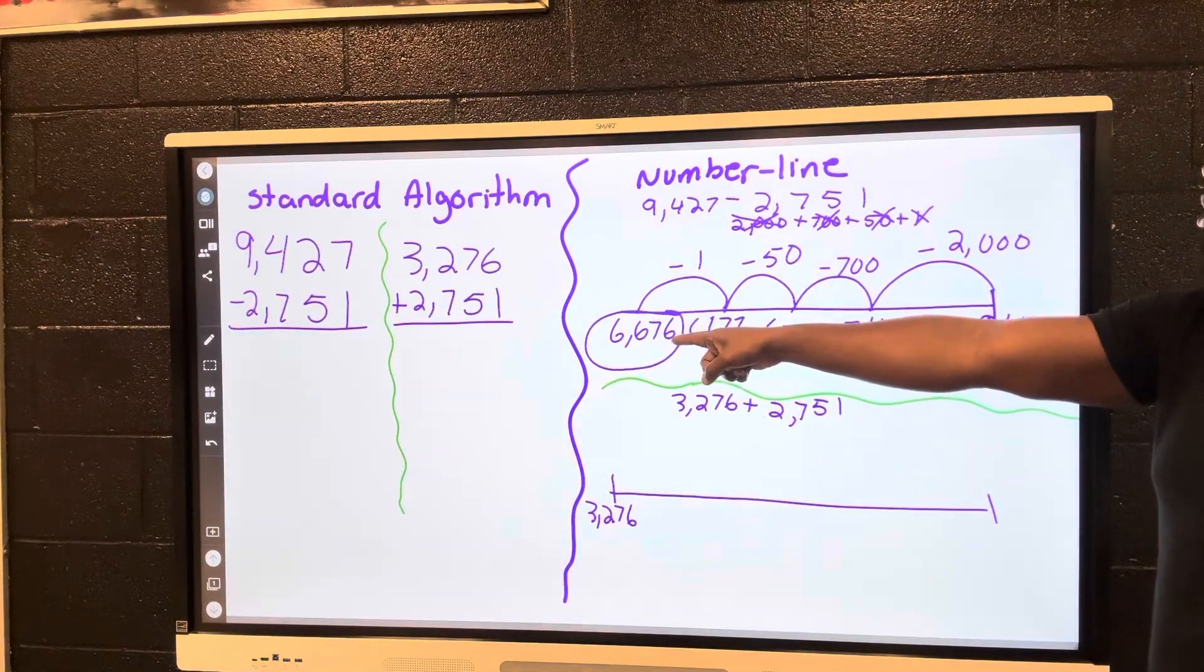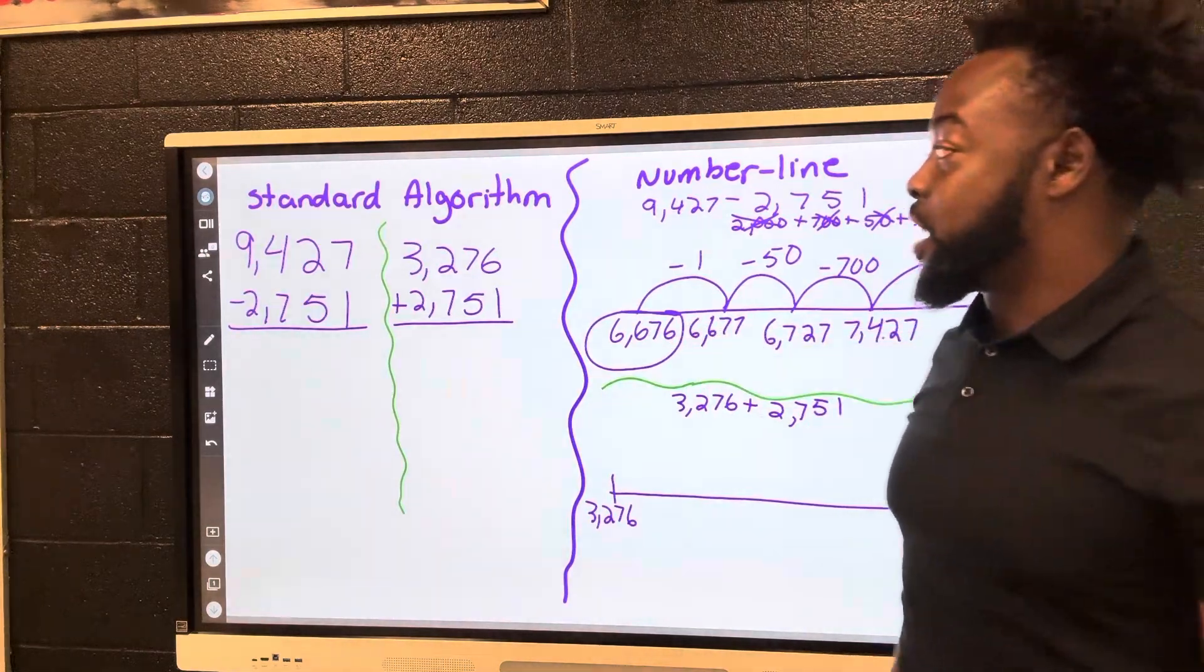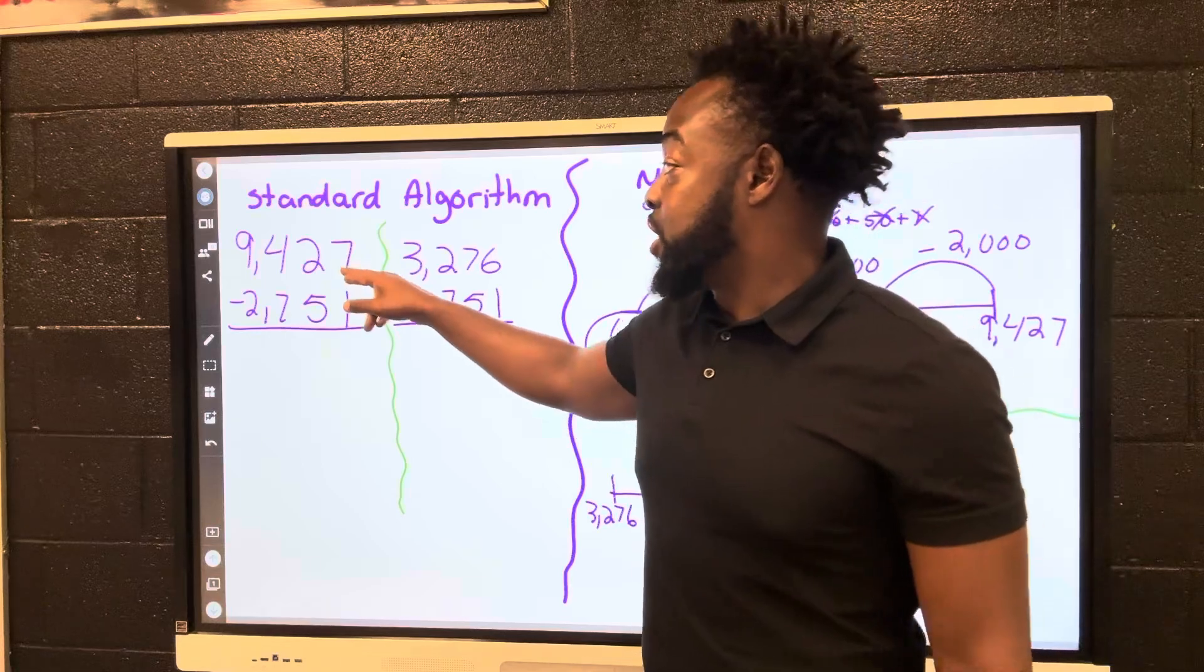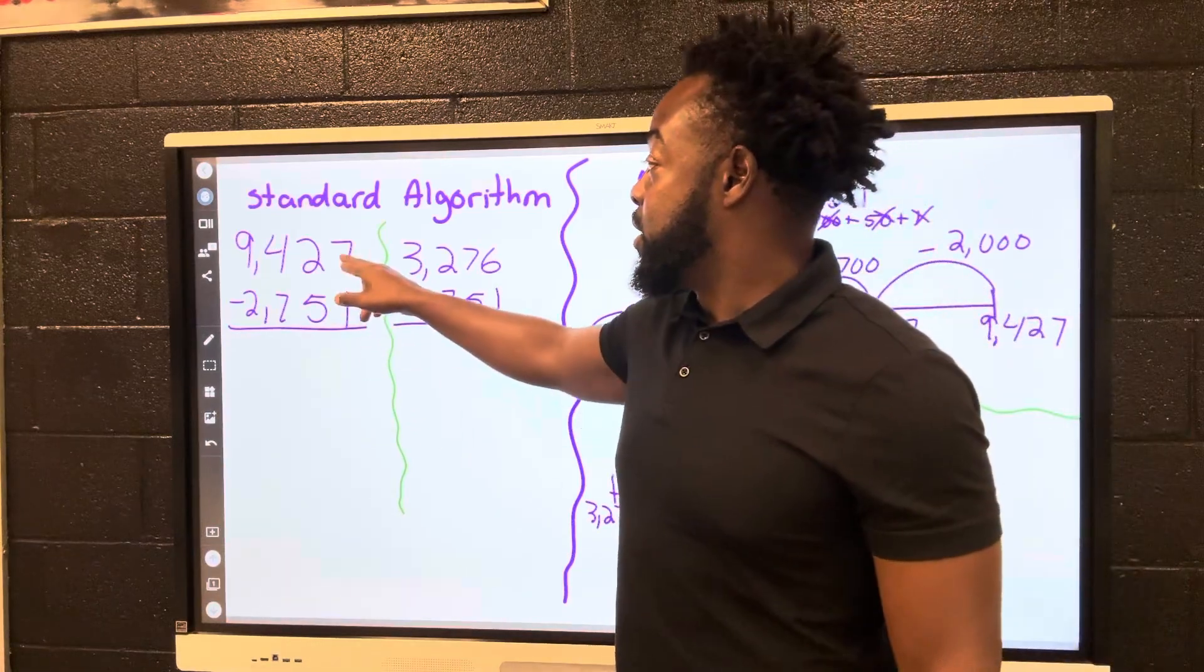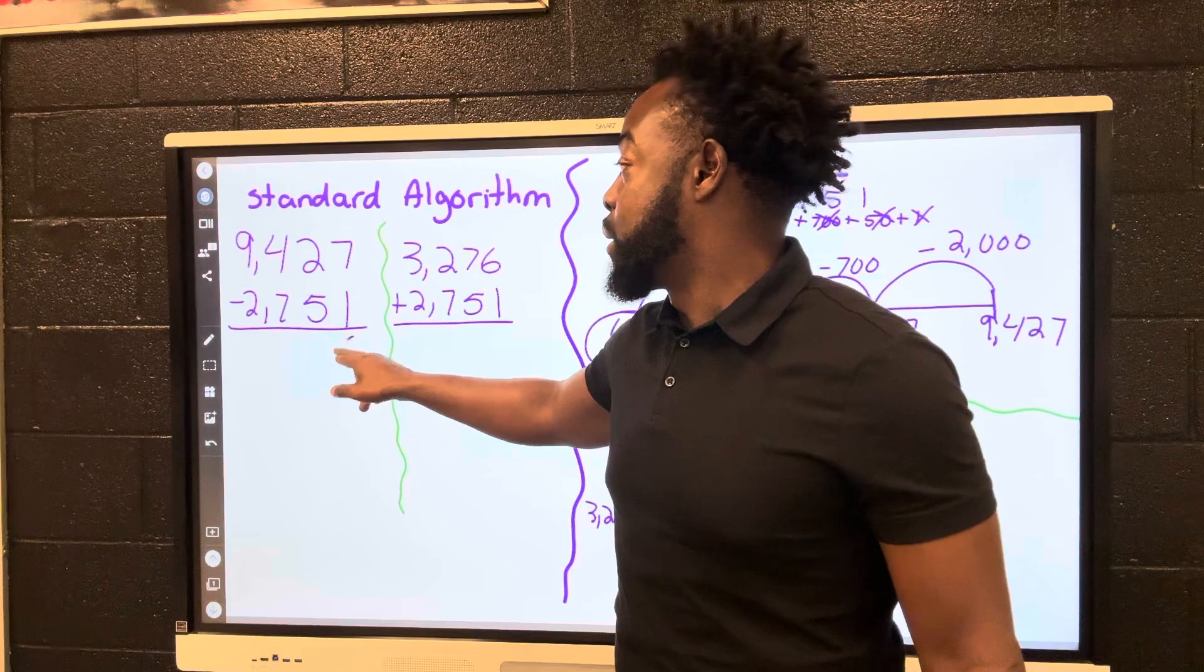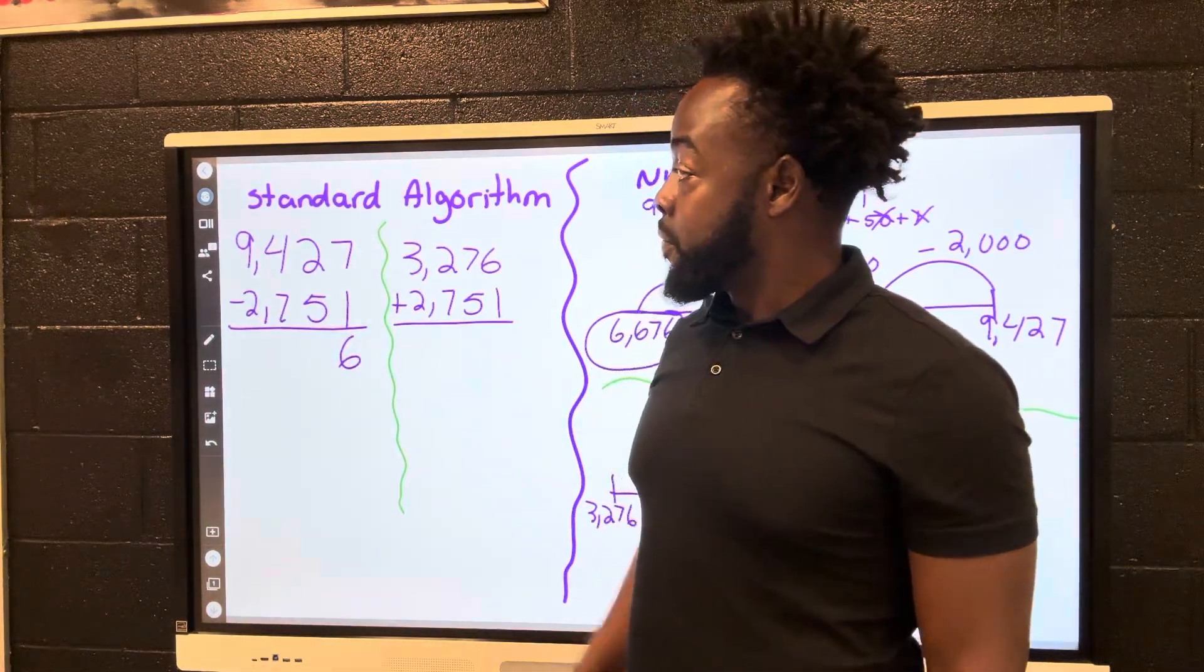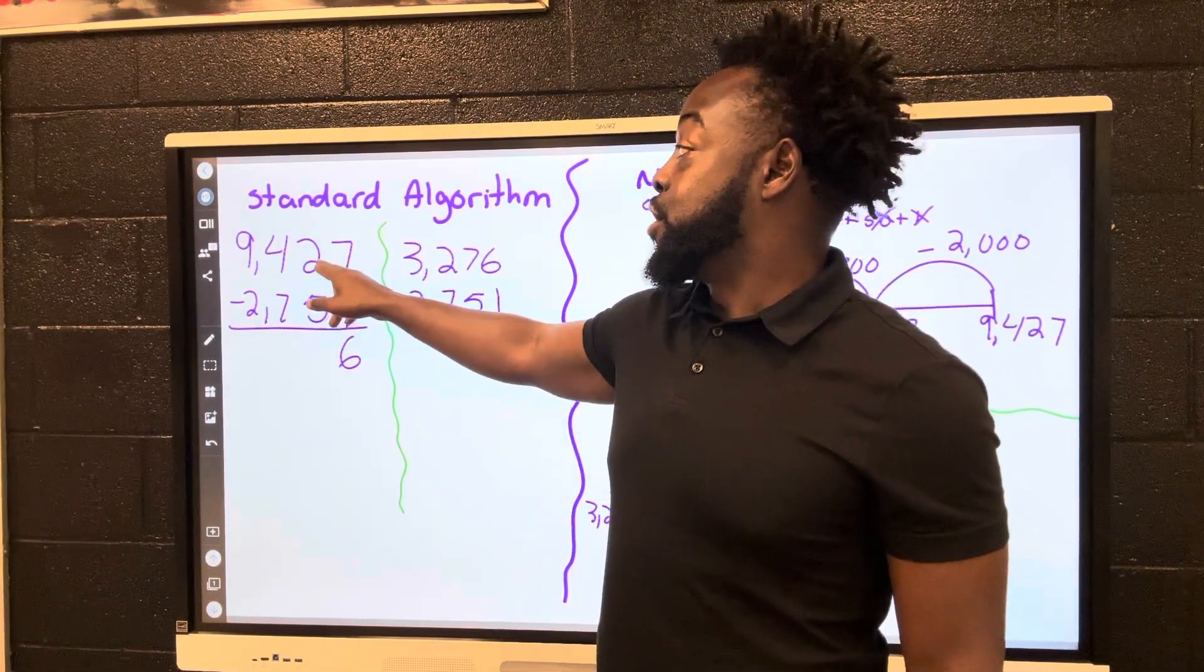7 minus 1, we see that's pretty obvious, that's 6. This 2 minus 5, which is really 20 minus 50, well we can't take 5 away from this 2.